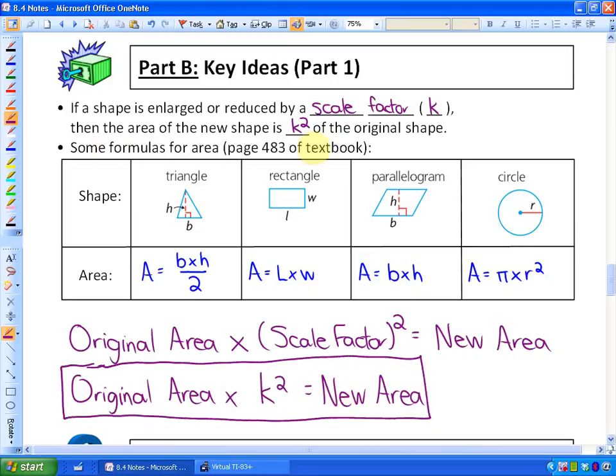And for future parts, here's some formulas that are also in your textbook, because we're going to be dealing with lots of areas. The area of a triangle is base times height divided by 2. The area of a rectangle is length times width. The area of a parallelogram is base times height. And the area of a circle is pi times radius squared.